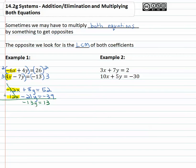Finally, to get the y alone, we have to divide both sides by negative thirteen. y is equal to -1.